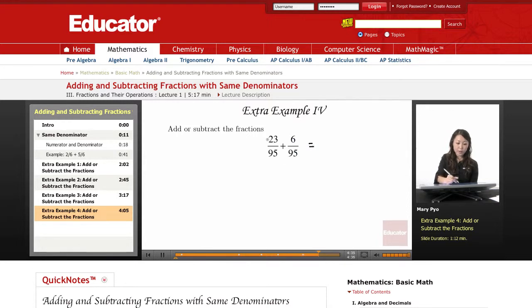So I take the numerators, which is 23 and 6, and I'm going to add them together. 23 plus 6 is 29.